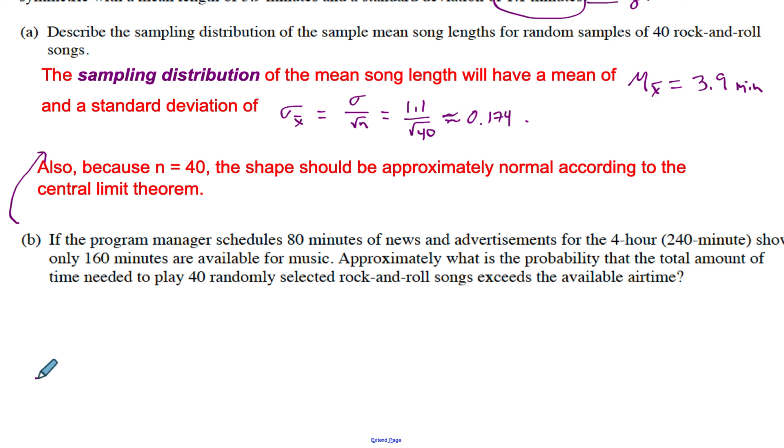This right here, if we were to sketch it, it's approximately normal. Not bad for me early morning here. The mean, I'm gonna put a mean here, 3.9, so the mean is 3.9, and σ for x̄, or the standard deviation of our sampling distribution, is 0.174. So you better believe they're gonna want you to use this. We're talking about mean of 3.9. We have 160 minutes for music and we have 40 songs.